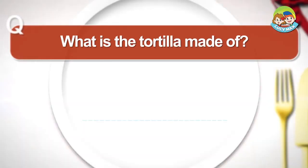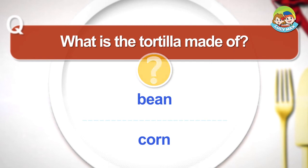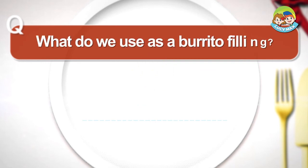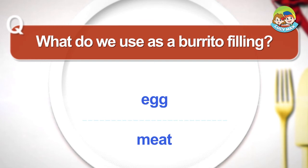What is the tortilla made of? Bean. Corn. What do we use as a burrito filling? Egg. Meat.